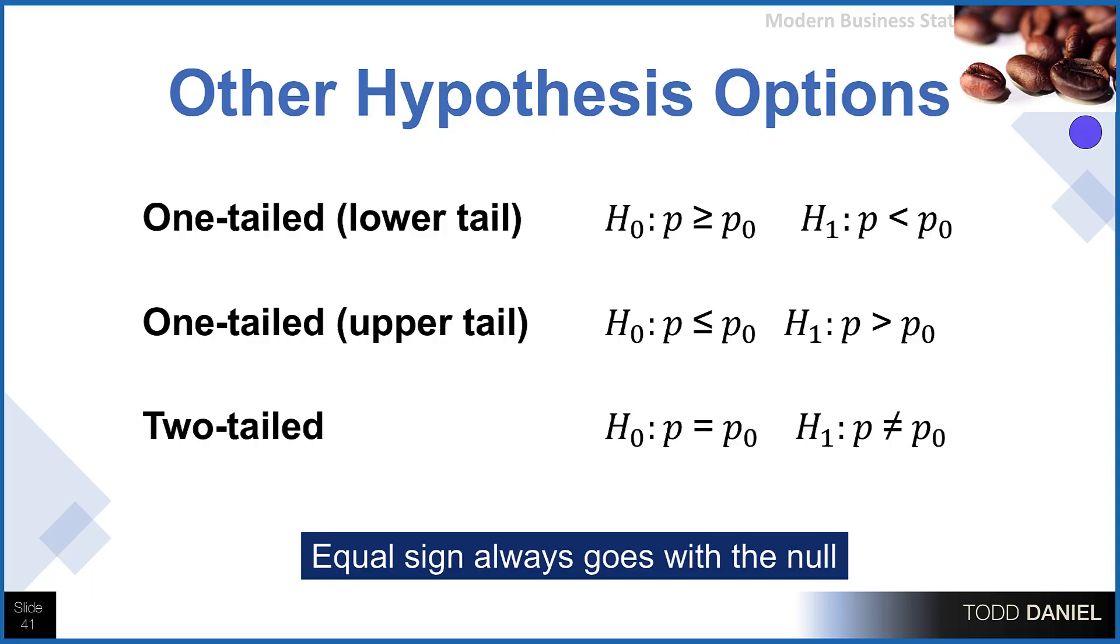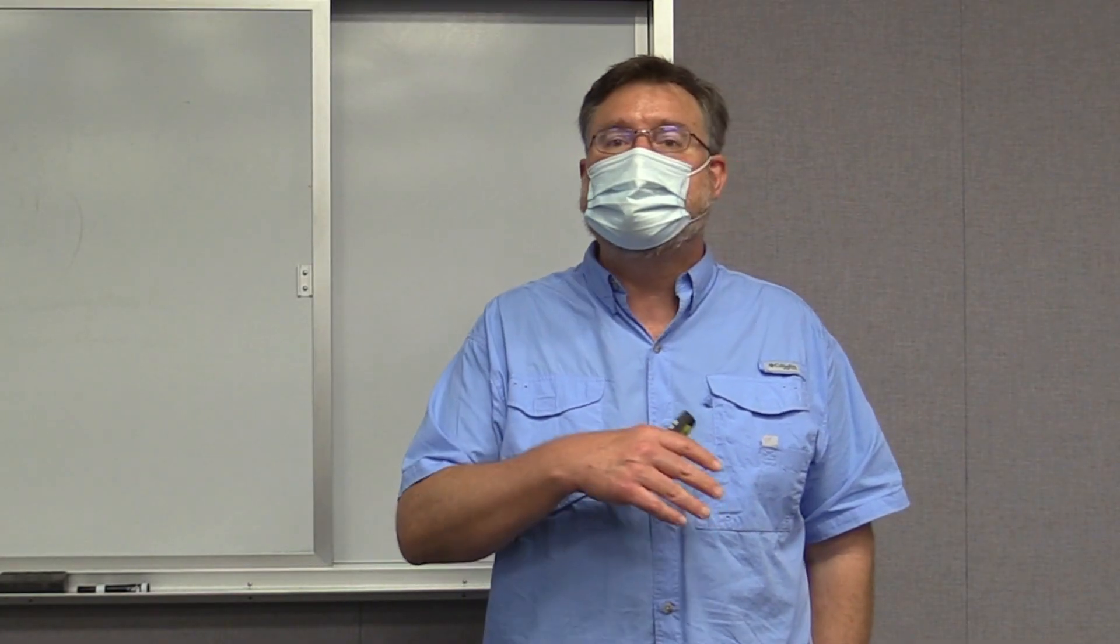Now before we calculate the statistics, I do want to show you our options if we were doing a one-tailed test. If we were doing a lower-tailed one-tailed test, our null would be that our proportion is greater than or equal to the population proportion. And the alternative would be that our sample proportion is less than the population proportion. For an upper-tailed test, we would simply reverse the signs. For a two-tailed test, we use the equal and does not equal. And you'll notice that for all of these examples, that the equal sign always goes with the null hypothesis: greater than or equal to, less than or equal to, or simply equal to.